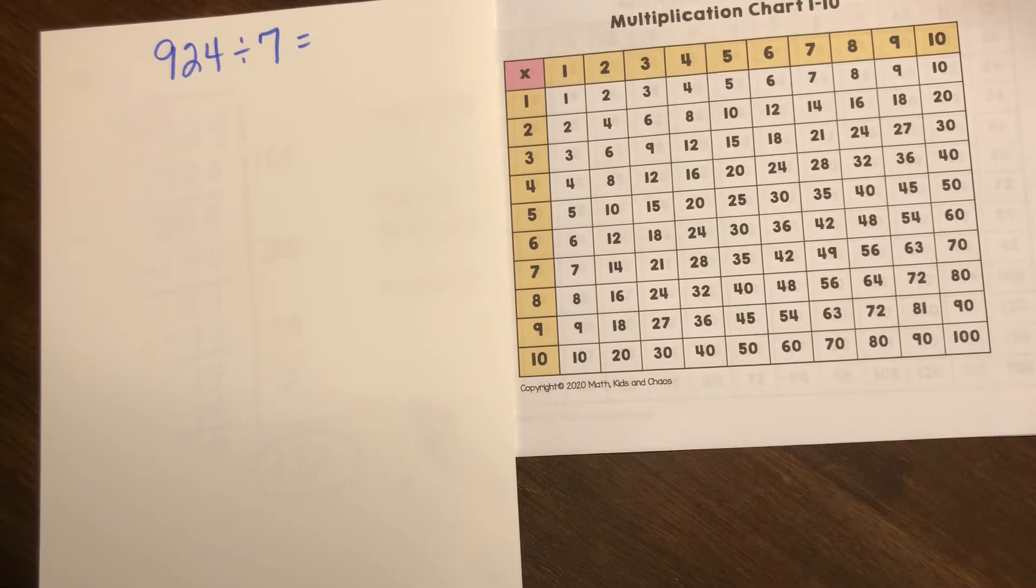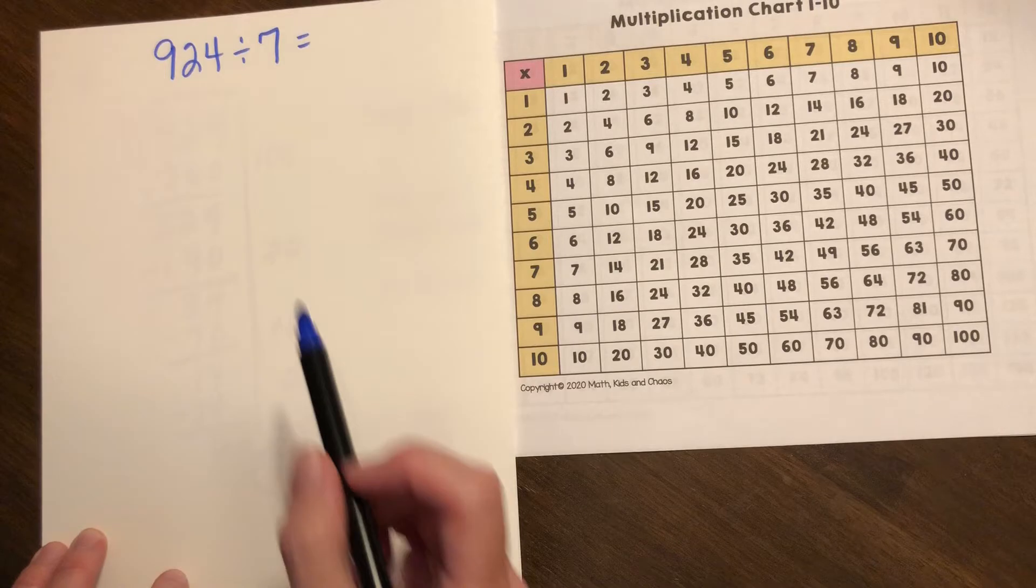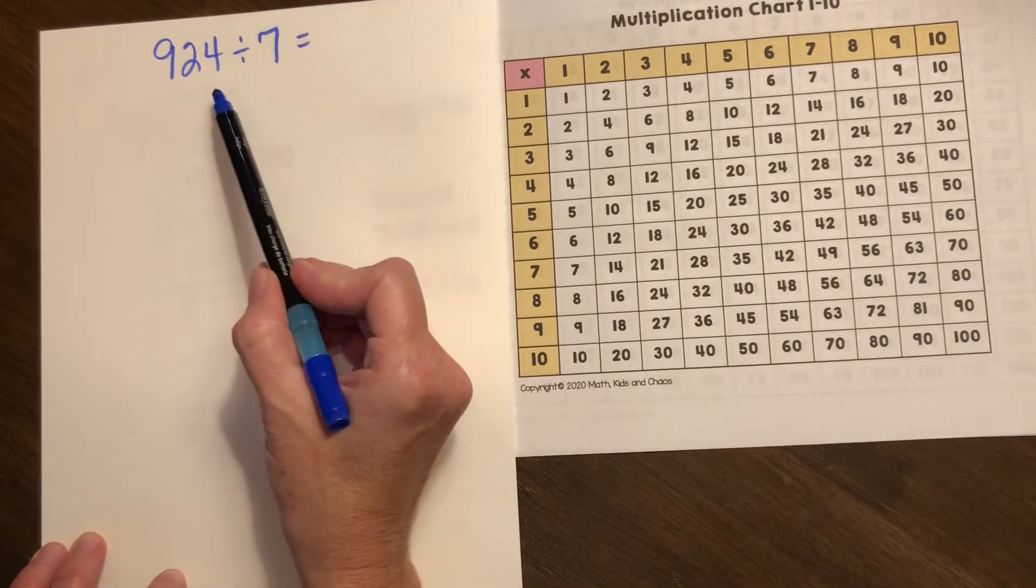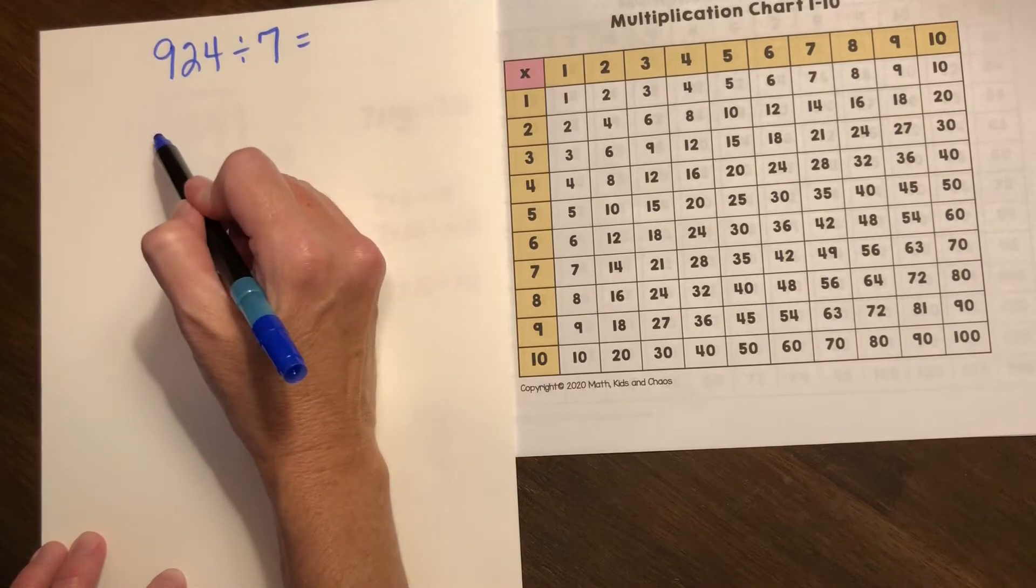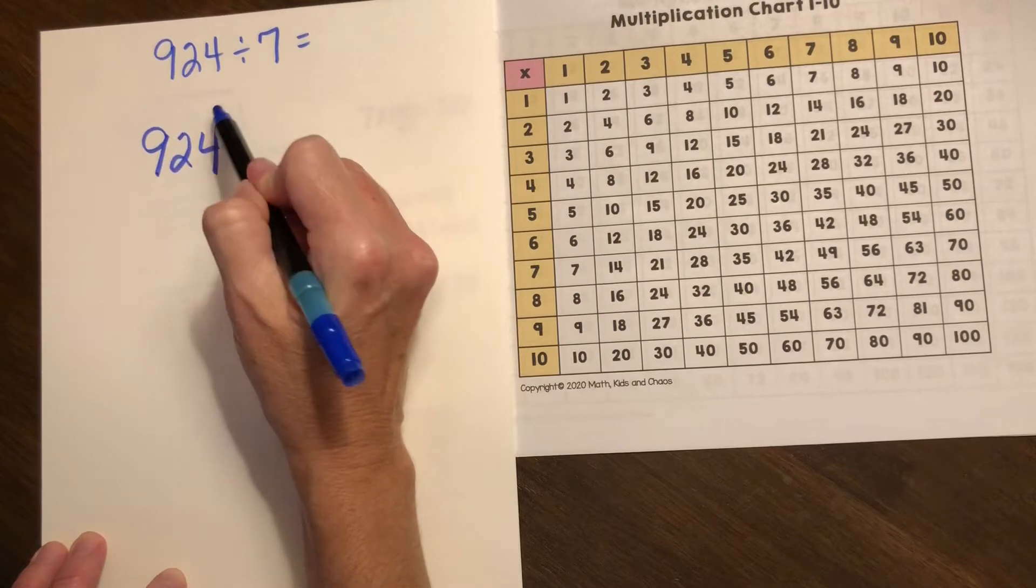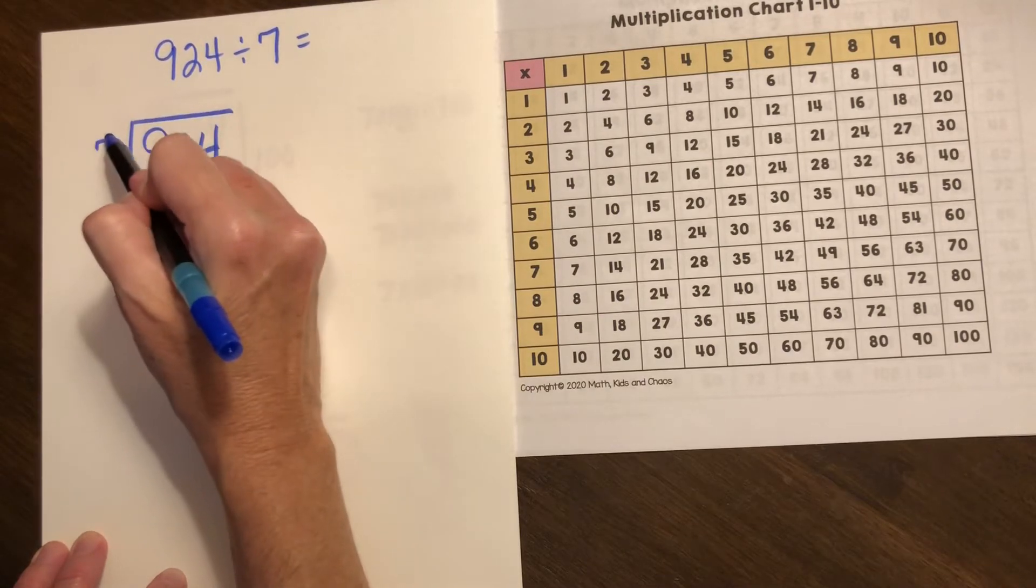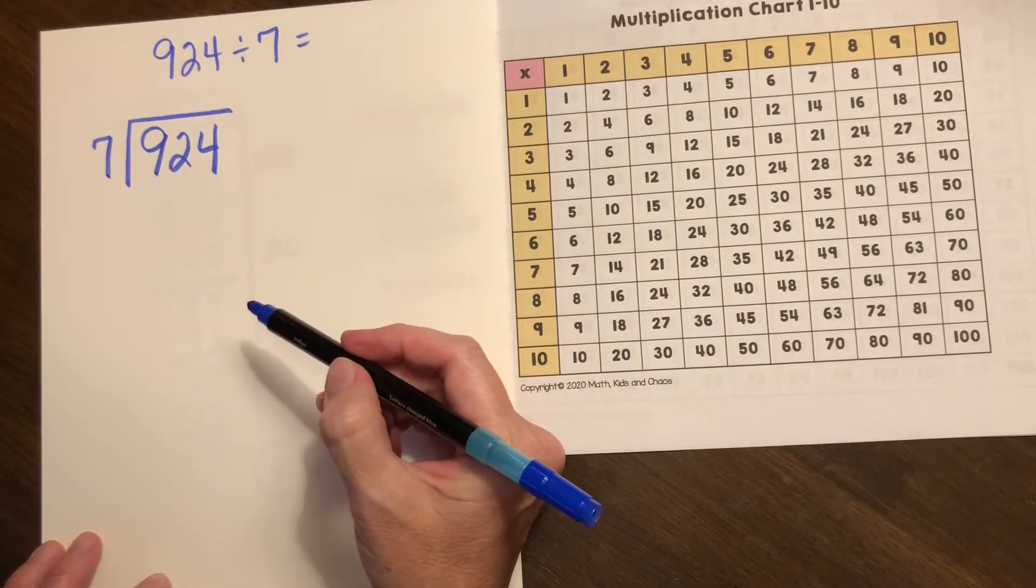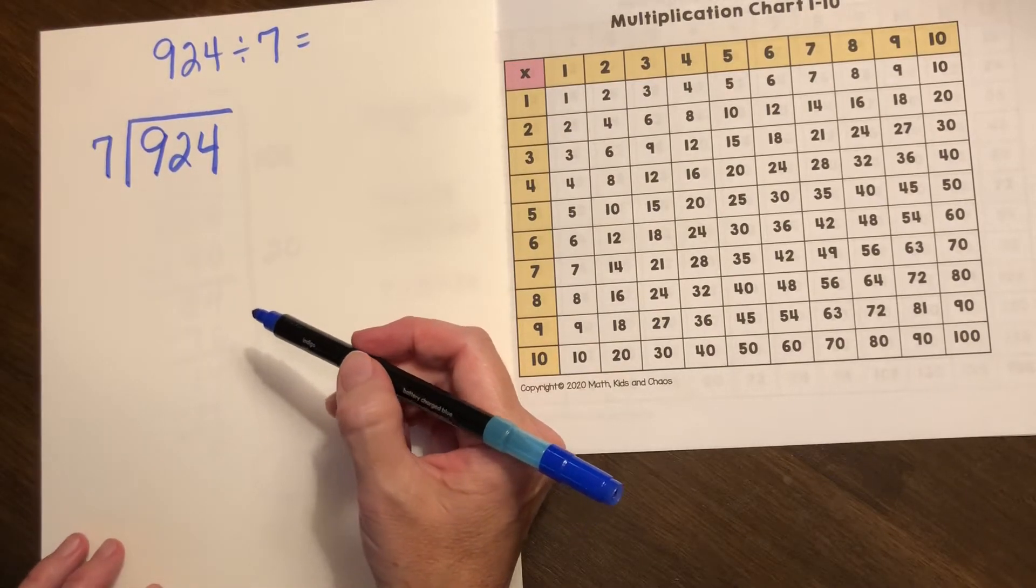So we have the division problem 924 and we are dividing it into groups of seven. For example, if we had 924 pages to read in a book study and we want to read the same number of pages every day for seven days, we would divide it into groups of seven to figure out how many pages we would read each day.